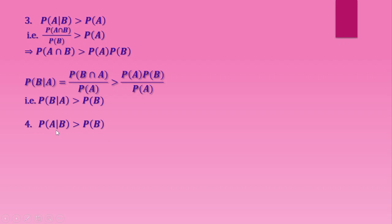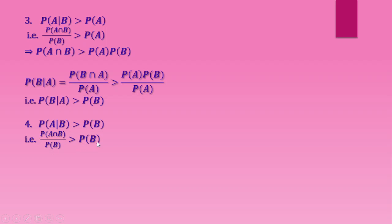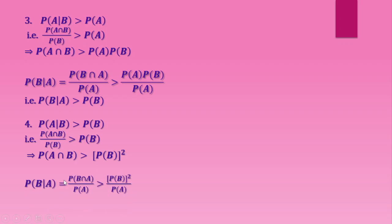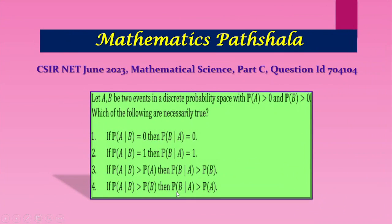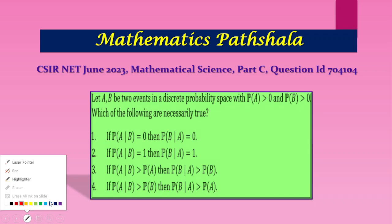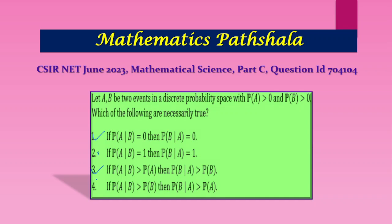Option 4: it is given that P(A|B) > P(B). Using the definition of conditional probability, P(B|A) comes out to be greater than P(B)² / P(A), which does not give us that P(B|A) > P(B|A) as required. So option 4 is not correct. Therefore, options 1 and 3 are necessarily true, and options 2 and 4 are false.